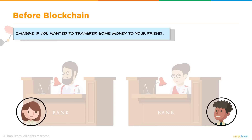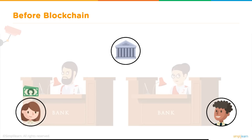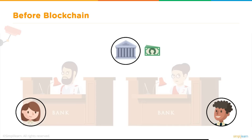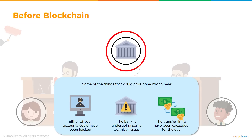Now let's take another example of a banking transaction. If a sender wants to send money to a receiver, typically before cryptocurrencies and blockchain technologies came into picture, we rely on banks. You transfer money to a centralized bank which takes the ownership and gives you the trust to transfer the money to the receiver, and in lieu charges a commission.